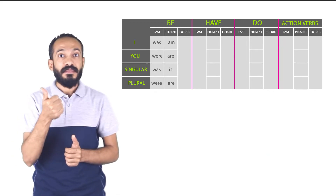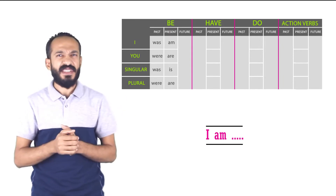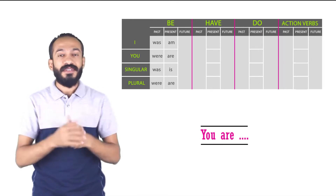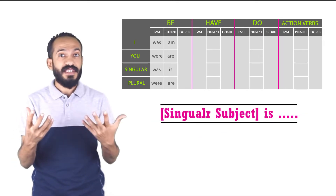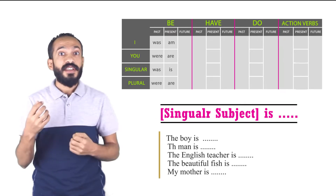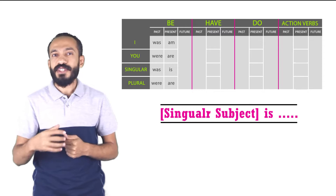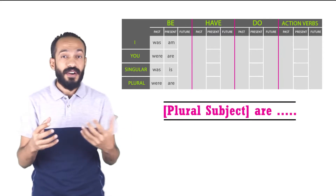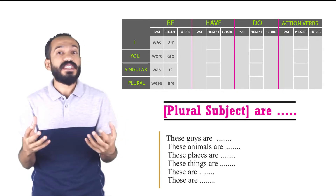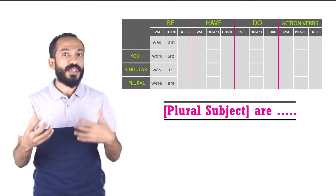Verb to be in the present tense: am, is, are. Every time I talk about myself, I say 'I am.' I never say 'I is' or 'I are.' You: 'you are.' The singular subject takes 'is' — the boy is, the man is, the English teacher is, the beautiful fish is, my mother is. If your subject is plural, we always use 'are' — these guys are, these animals are, these places are, these things are, these are, or those are.